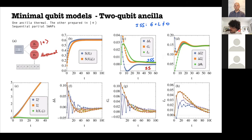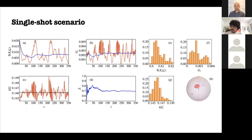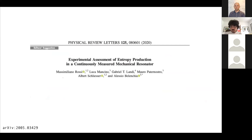I'm going to move on and skip the single-shot scenario — which would extend these ideas to statistics of entropy production within a single stochastic realization — and go directly to the experimental paper, which is an experimental assessment of these very ideas.